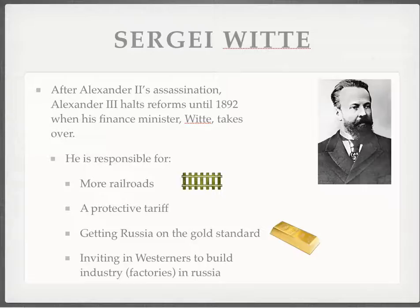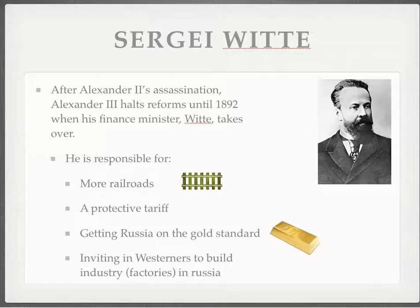After Alexander II is assassinated, Alexander III takes over, and he's much more conservative. He believes in the power of the Romanov dynasty and doesn't necessarily want to open up Russian society at all. Fortunately, his finance minister Sergei Witte does. He continues to industrialize and increase the size of railroads, creates a protective tariff which helps Russian industry by putting taxes on imported goods, gets Russia on the gold standard, and uses Western powers to benefit Russia by bringing them in to build industry — particularly factories built by Western businesses and engineers — in order to quickly modernize and make Russia a more significant international economic power.